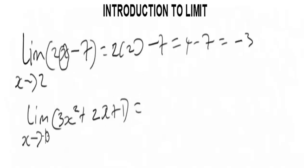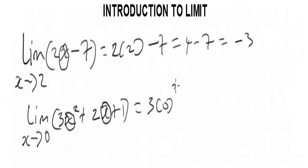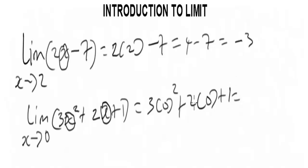Very, very simple. All you have to do is, since x is tending to 0, plug 0 into x. You are going to have 3 and bracket 0 squared, plus 2 and bracket 0, plus 1. When you simplify, everything gives you 1. That is the answer.